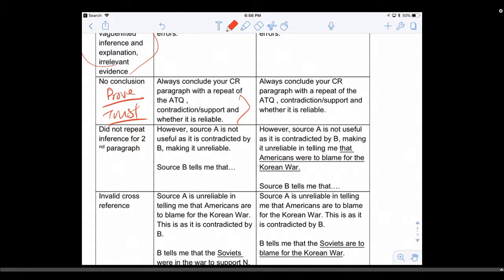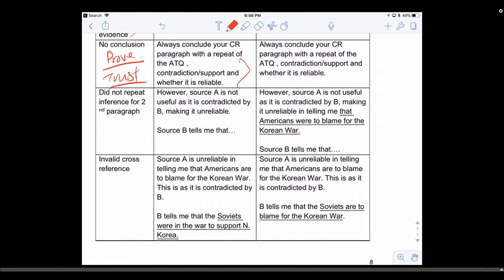Next: did not repeat inference for second paragraph. Look at this - 'However, Source A is not useful as it is contradicted by B, making it unreliable.' Then you go straight to 'B tells me the other side.' This is wrong because you didn't repeat the inference. Unreliable in what? I need to know specifically.